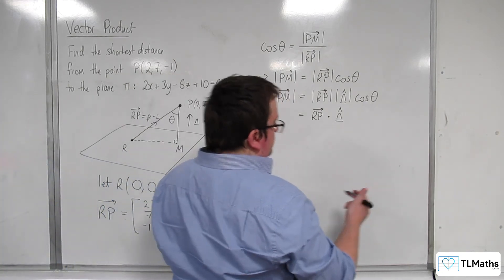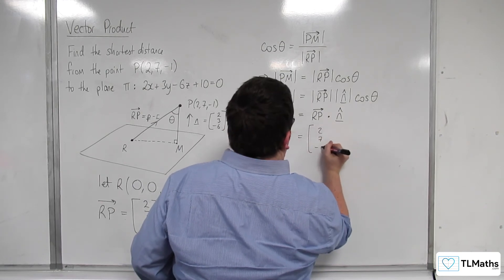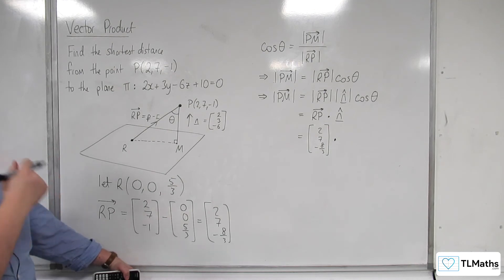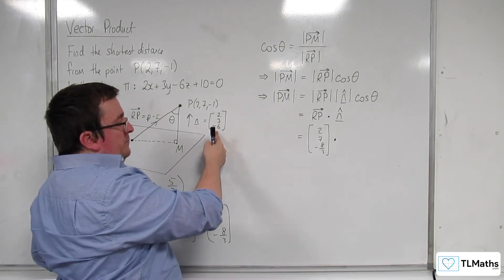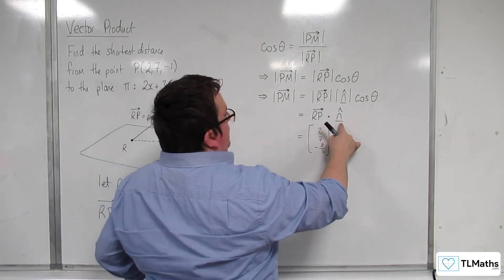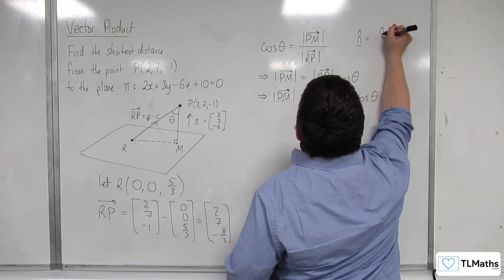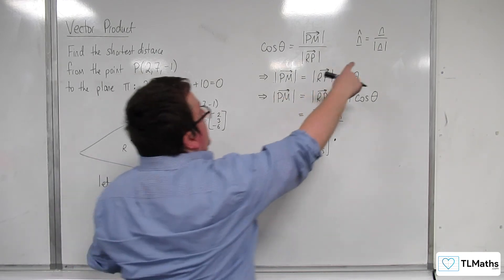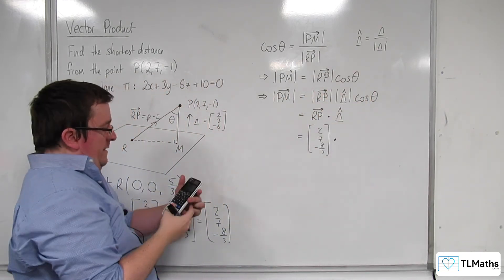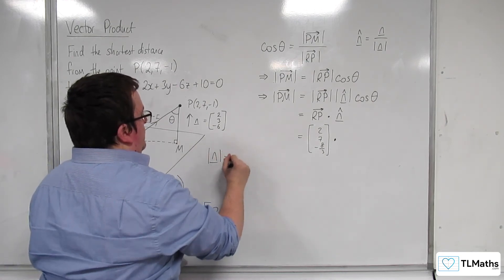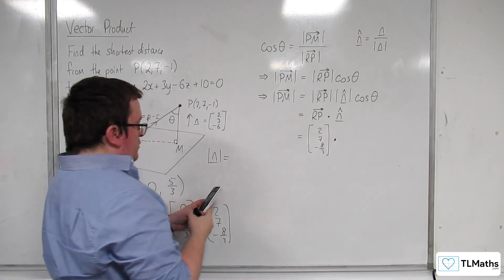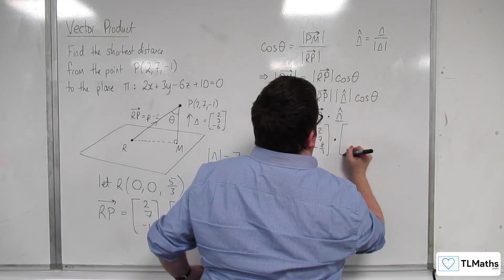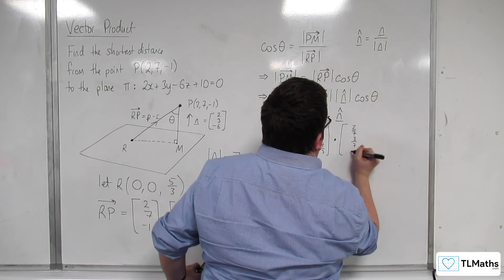So we have (2, 7, -8/3) dotted with the unit normal vector here. We know that N is (2, 3, -6). Now, the unit normal vector would be the normal vector itself divided by its length. So I need to work out what that is. The length of that is square root of 4 plus 9 plus 36, so square root of 49, so 7. So that means that N hat here is (2/7, 3/7, -6/7).